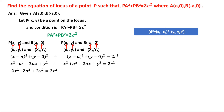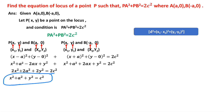We can take 2 as common since it is present in all terms and cancel it with the 2 on the right side. Transposing c², the equation of the locus is x² + a² + y² - c² = 0.